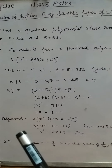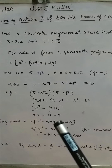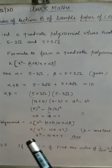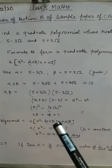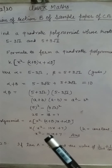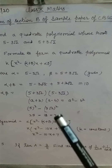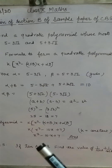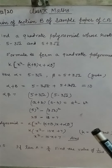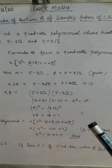Therefore the polynomial is k times (x squared minus sum of roots times x plus product of roots). The sum of the roots is 10 and the product is 7, giving us x squared minus 10x plus 7. Here k is a constant, and we take k equal to 1.